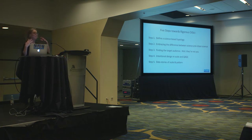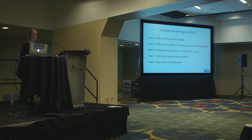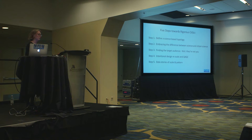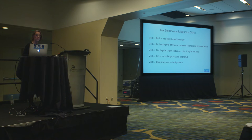I put together a talk that had five steps in the abstract, so I thought I would actually use the abstract and put those five steps here. I'm going to weave these into the entire talk: defining a science-based topology, embracing the difference between science and citizen science, finding the target audience — with a hint to the science community: they're not you — intentional design, scale and quality assurance, quality control of the data, and then thinking about data stories.